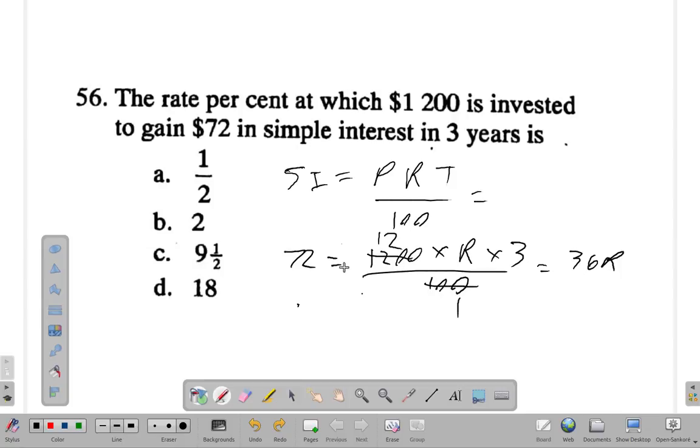So 72 equals 36R. Let's rearrange it: 36R equals 72.